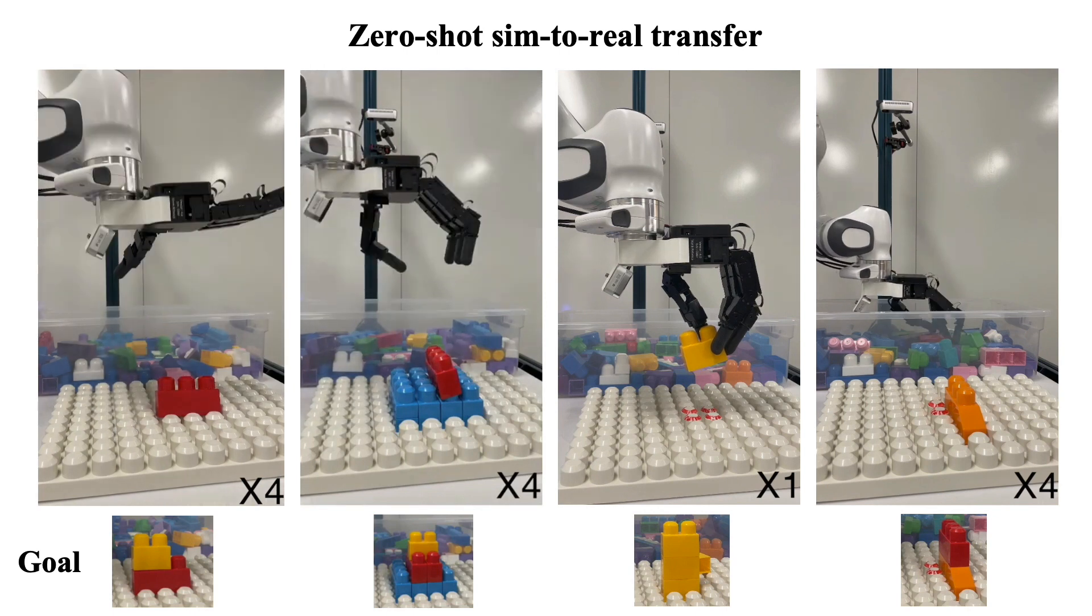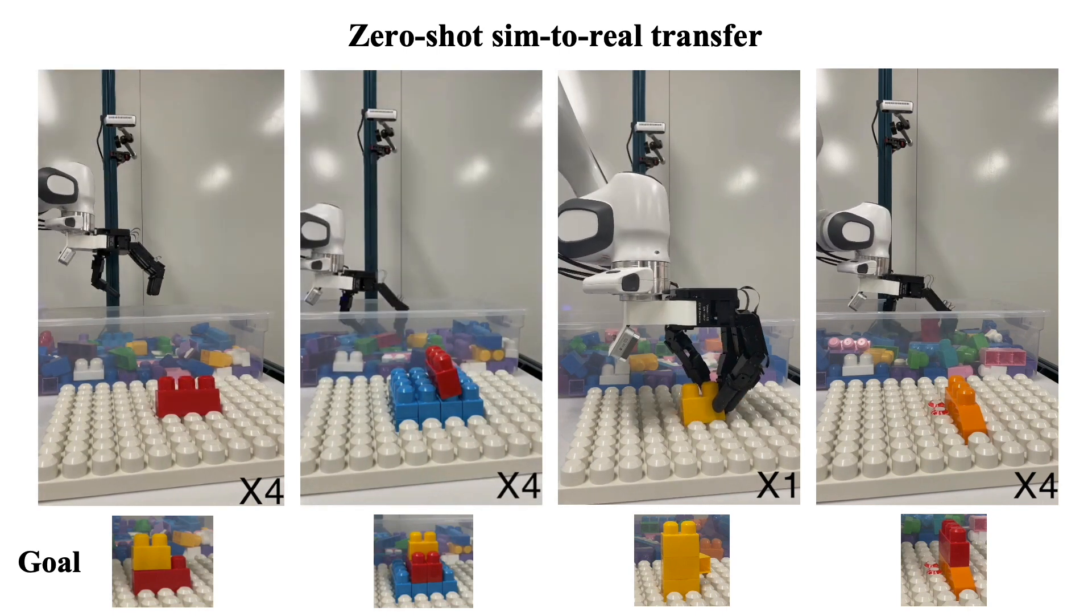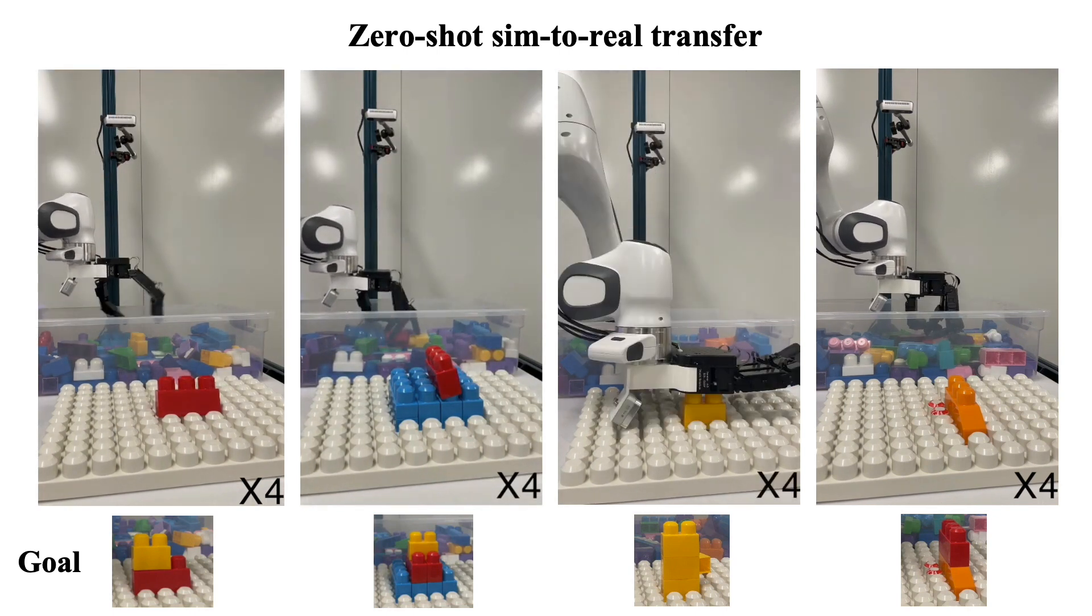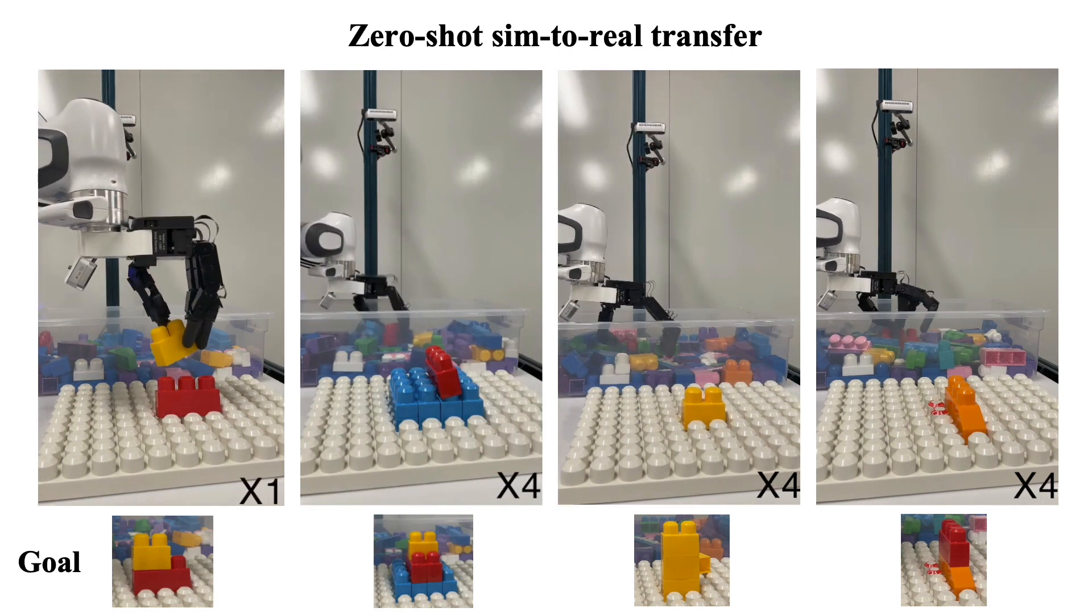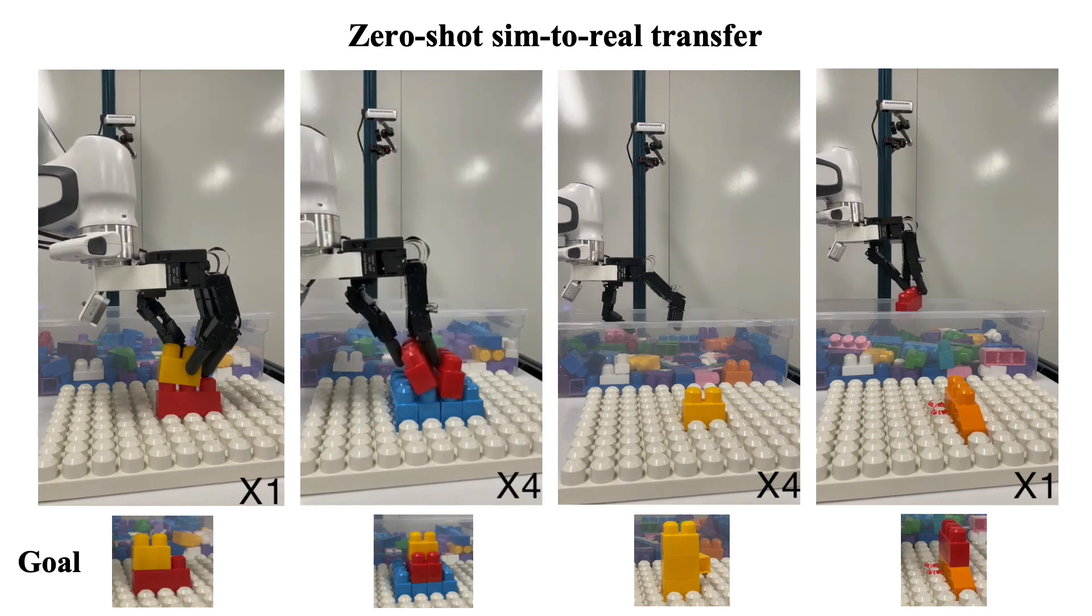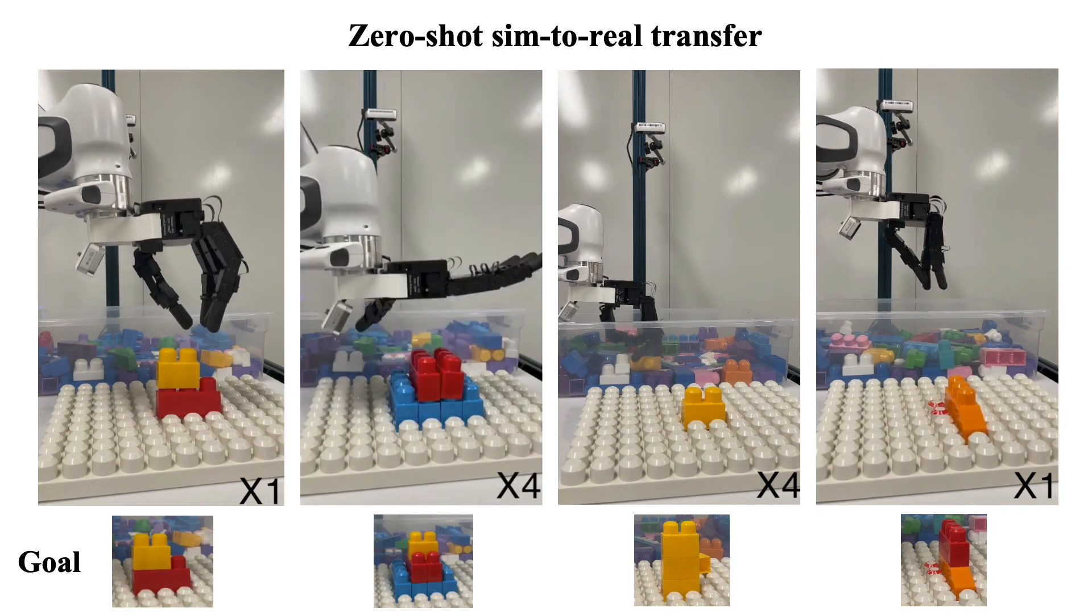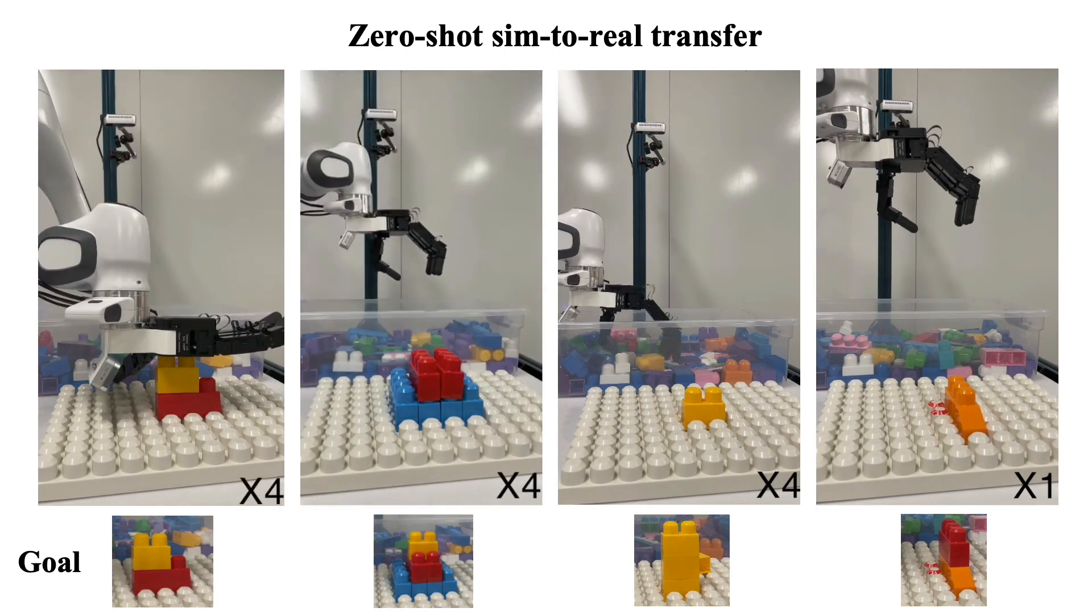In the last video, we test the robustness of the system by hiding the target block in a cluttered scene and poking away the block when it is held in hand. Our system utilizes the transition feasibility functions to select the best policy to execute at different stages and re-plan after disturbances.